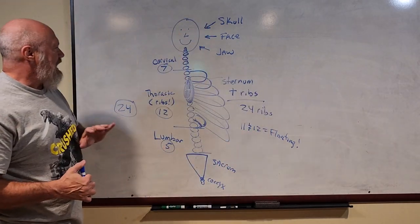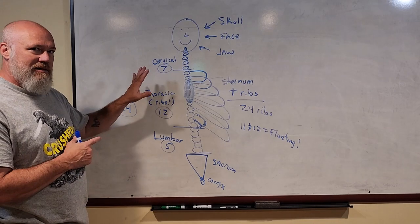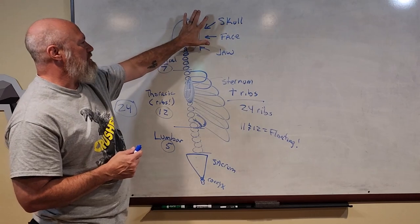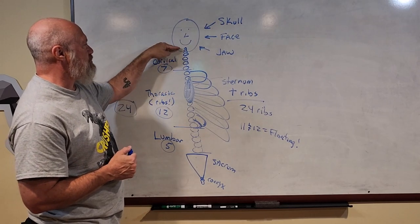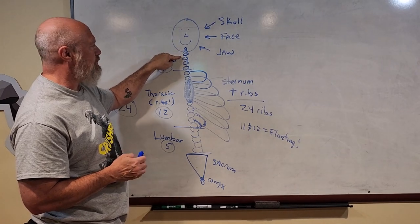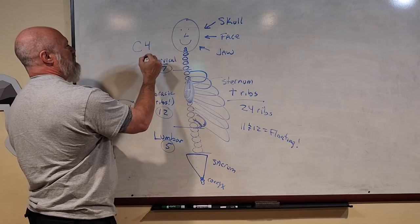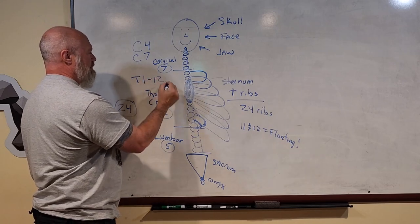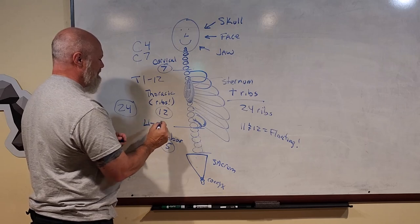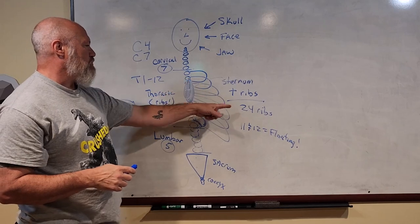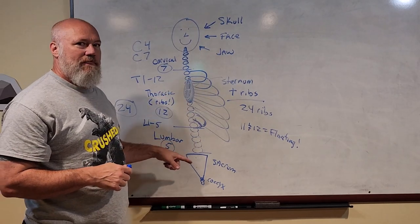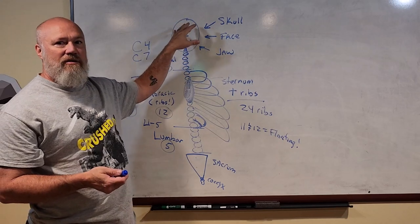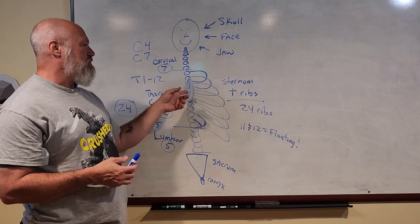So your axial skeleton covers almost half of all your bones. The skull, face, and jaw contribute many bones; seven cervical named C1 through C7; twelve thoracic named T1 through T12; five lumbar named L1 through L5; plus 24 ribs and 24 vertebrae — that's 48 already. Add the sacrum, coccyx, jaw, face, skull (22 bones), and sternum and we're up to about 74–75 bones out of 200.